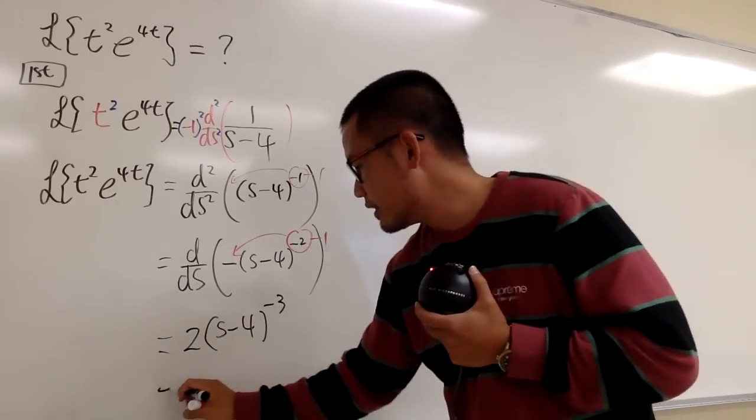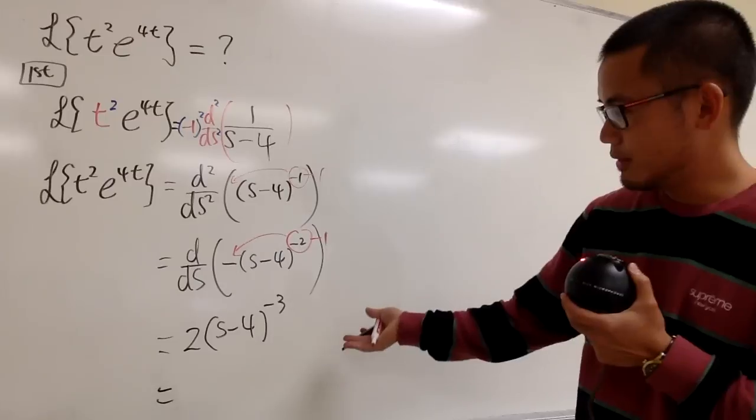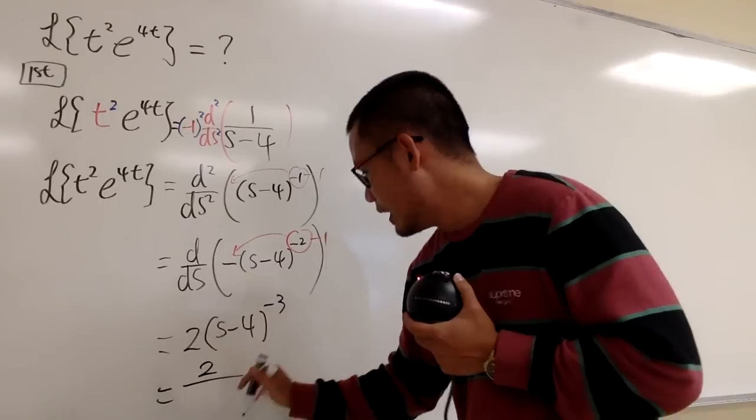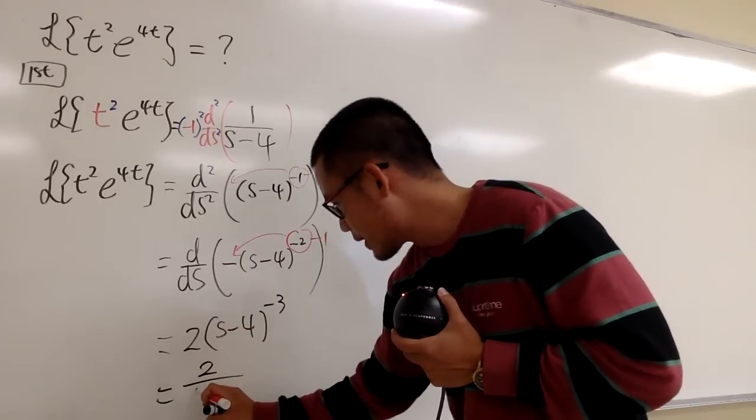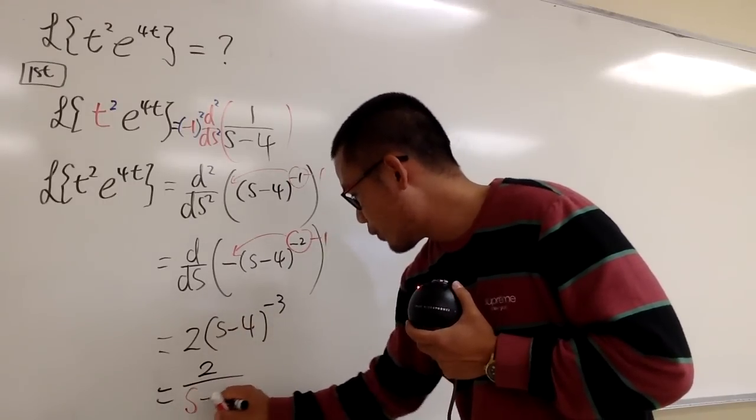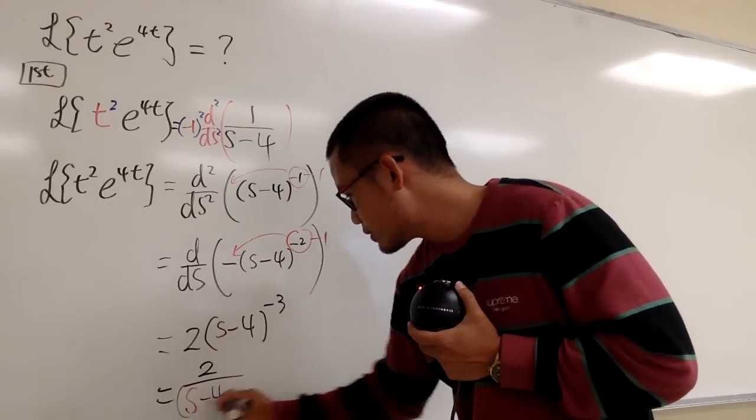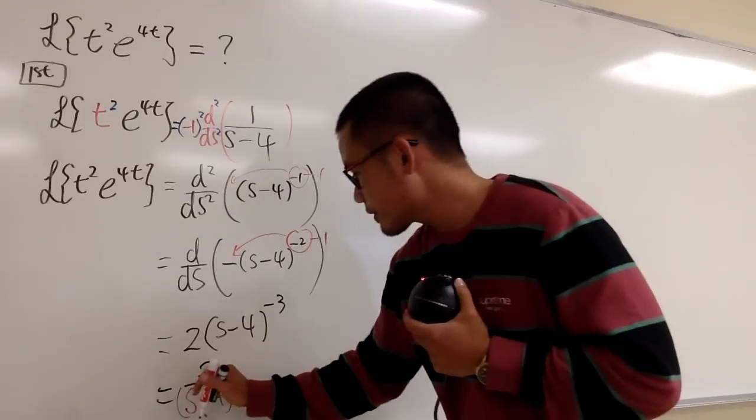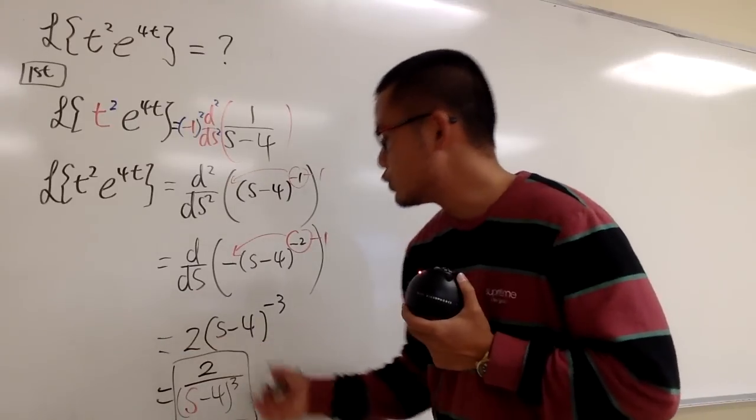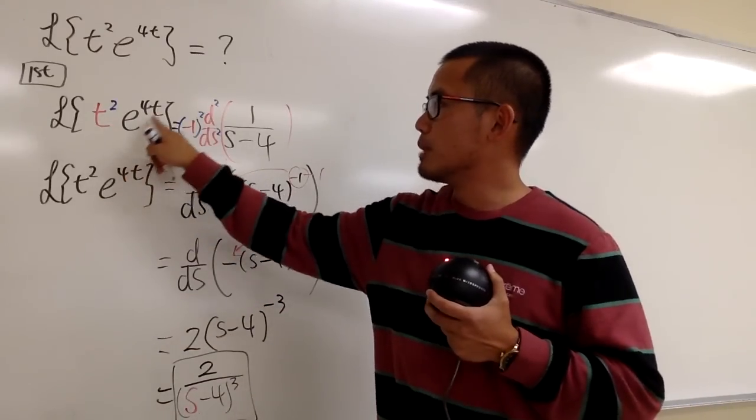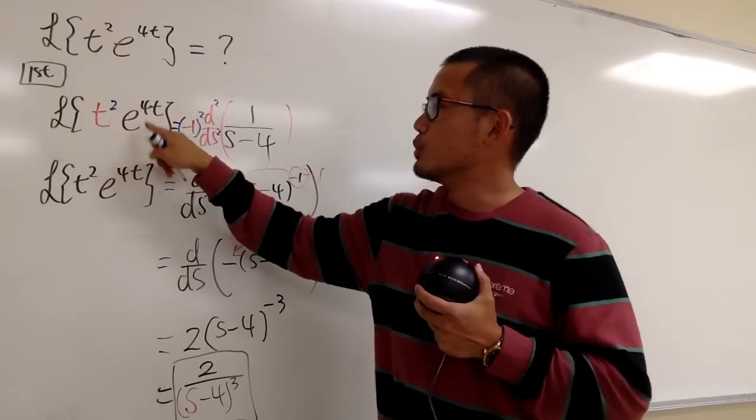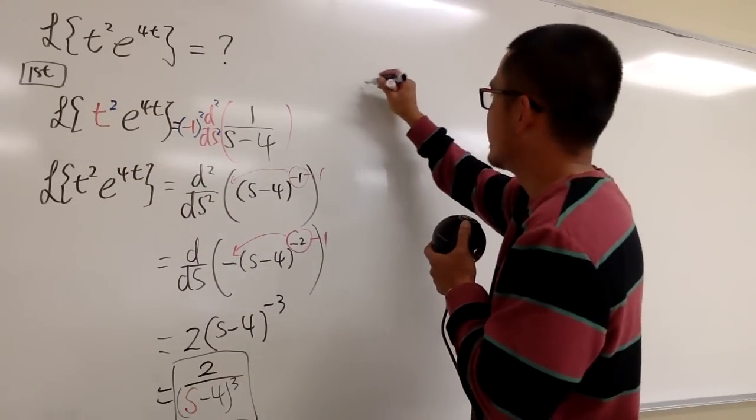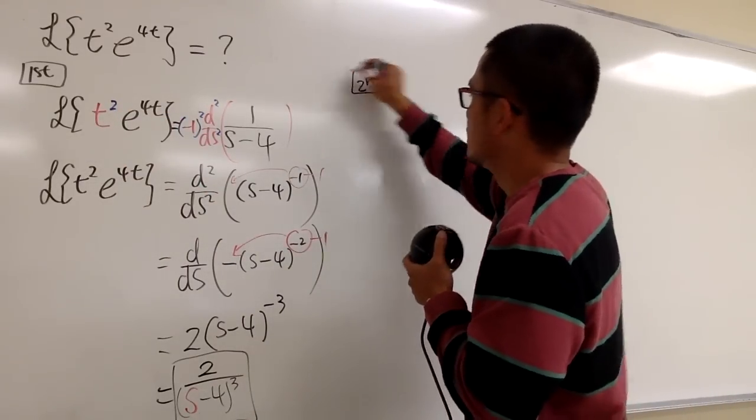Finally, I can put this down nicely for you guys. All the 2 on the top over s, I'll put down the s in red, minus 4, and then raised to the positive 3 power, like that. And that's it. So this is what you have to do when you multiply by t squared with a function that you know. All right, so that's the answer, and let's look at the second way.